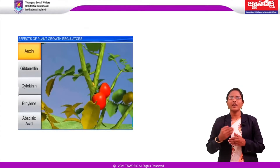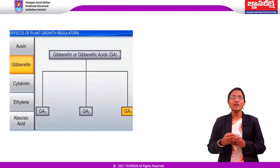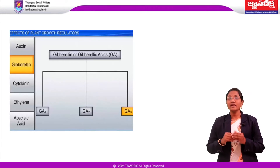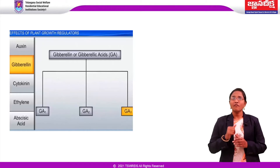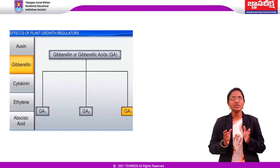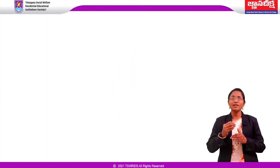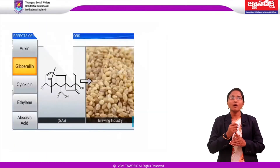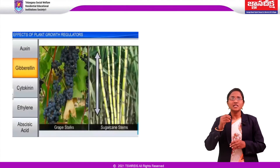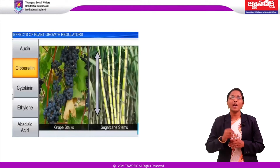Another phytohormone is gibberellin, discovered by Kurosawa. There are more than a hundred gibberellins reported from widely different organisms, denoted as GA1, GA2, and GA3. GA3 was one of the first gibberellins to be discovered. All gibberellins are acidic in nature. Gibberellins are synthesized in germinating seeds and internodes. They increase the length of the axis and are used to increase the length of grape stalks, and also improve the size and shape of apples.